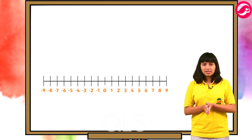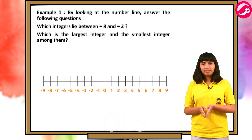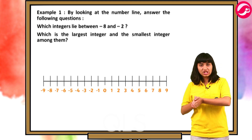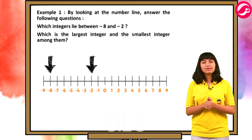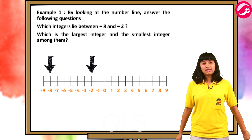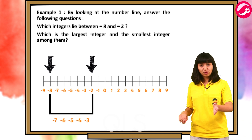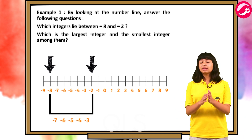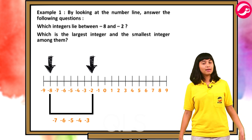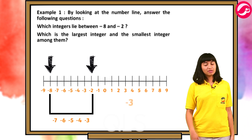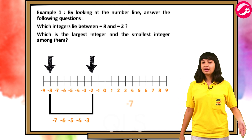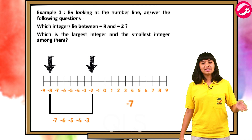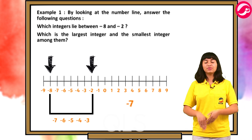By looking at the number line, answer the following: which integers lie between minus eight and minus two? Which is the largest integer and which is the smallest among them? Minus two aur minus eight ke beech mein integers hain: minus three, minus four, minus five, minus six, and minus seven. Sabse right mein hai minus three, so minus three is the greatest. Sabse left mein hai minus seven, so minus seven is the smallest.